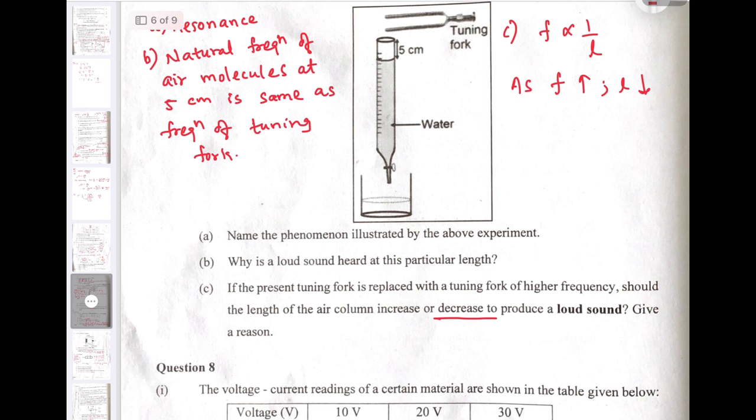If the present tuning fork is replaced with a tuning fork of higher frequency, should the length of air column increase or decrease? The answer is decrease, because the frequency depends inversely on length. So as the frequency of the tuning fork will increase, the length required for resonance, length of air column, should decrease.